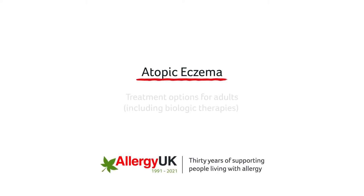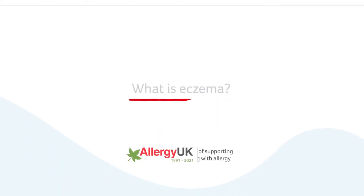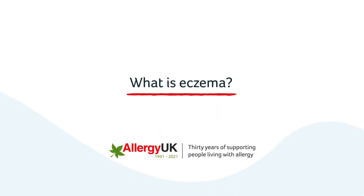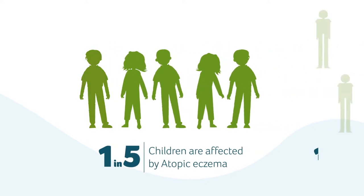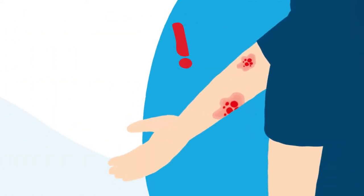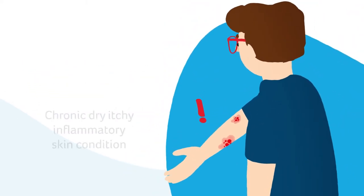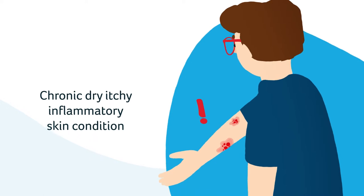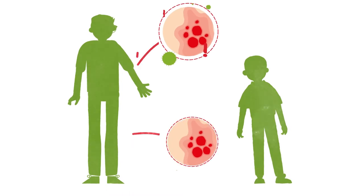Atopic eczema treatment options for adults including biologic therapies. What is eczema? Atopic eczema affects around 1 in 5 children and 1 in 10 adults in the UK. Atopic eczema, also known as atopic dermatitis or eczema, is the most common form of eczema and is a chronic dry itchy inflammatory skin condition.